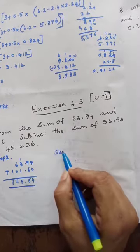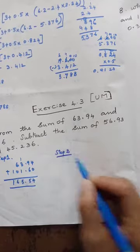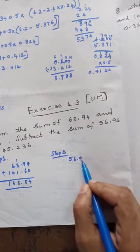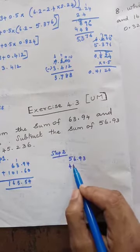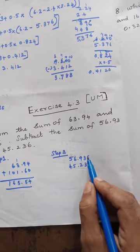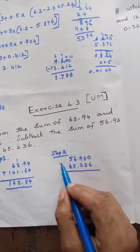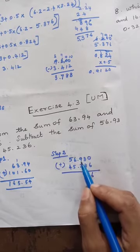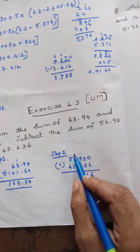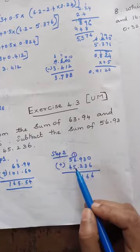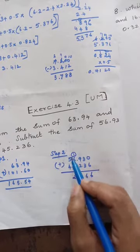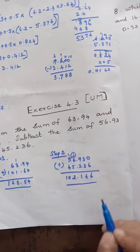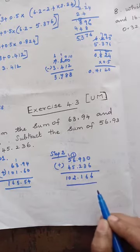Step 2: Add 56.93 and 45.236. Write 56.930 to match decimal places. 0 plus 6 is 6, 3 plus 3 is 6, 9 plus 2 is 11 — write 1, remainder 1. 6 plus 5 is 11 plus 1 is 12 — write 2, remainder 1. 9 plus 1 is 10 — write 0... The answer is 102.166.